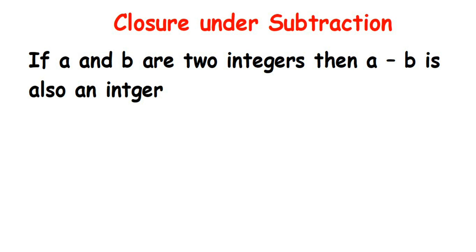Here we have a topic called closure under subtraction. You might have seen properties like closure, associative, and distributive in integer chapters or rational numbers. The closure property says that whenever you subtract two integers, your answer is always an integer. That is, if a and b are two integers, then a minus b is also an integer. That is why we say that integers are closed under subtraction.